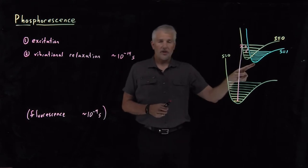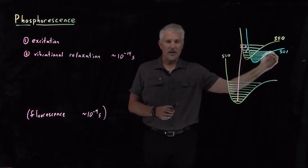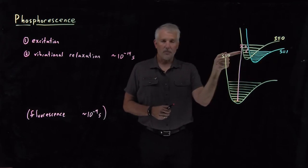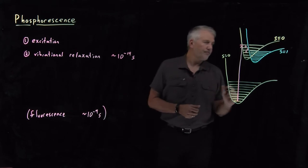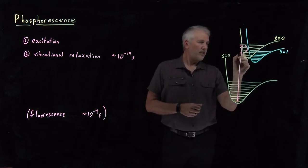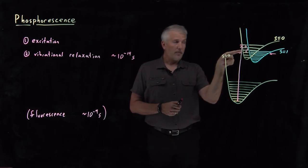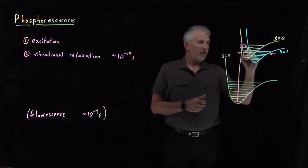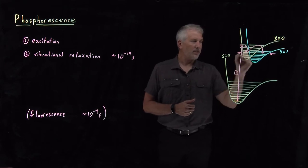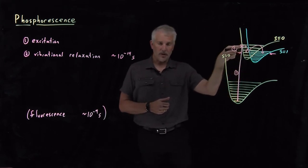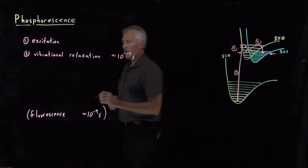However, if there's a nearby triplet state, a spin-forbidden state that it couldn't be excited into, it may happen that some of these vibrationally excited states in the triplet electronic state line up pretty well with the vibrationally excited states in the singlet well that we've excited the molecule into. If let's say this energy level and this energy level line up in energy pretty well, then instead of vibrationally relaxing from this singlet vibrationally excited state further down, it may undergo what's called inter-system crossing.